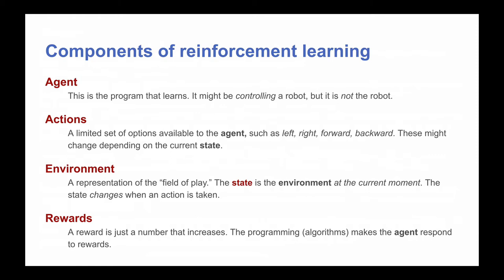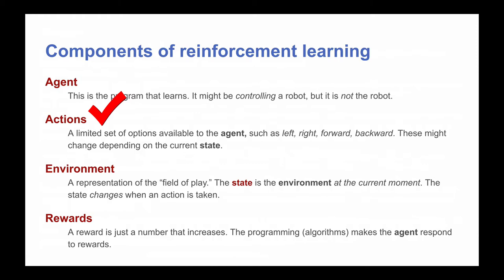Regardless of whether the system is controlling a robot or playing a game like chess, a system that learns with reinforcement will include these four aspects. The agent is the system itself — it's important to bear in mind that the agent is just software, the program that learns. The actions are programmed into the system. The robot dog system described by Mitchell can only do three things: take a step forward, take a step backward, and kick. It doesn't have an option to jump or step to the side. Its programming defines its actions, and each system would have its own possible actions.